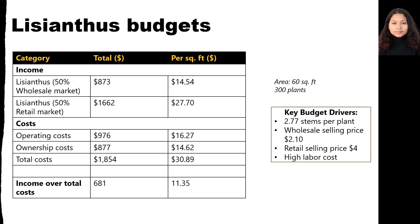The budget assumes the business is paying $20 per hour for labor, whether it is provided by the owner or hired labor. However, the budget can be customized to remove this labor cost if the business wishes to see return to management without labor. Total income over total cost is $681 for 60 square feet when labor cost is included.